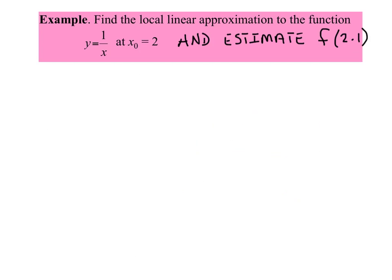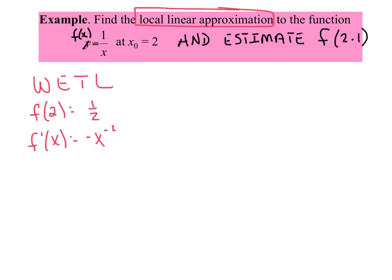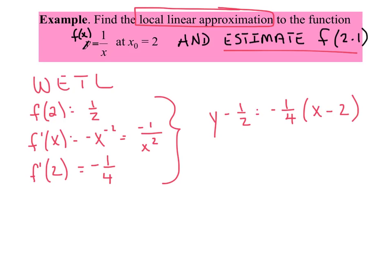Our next example, they want us to find the local linear approximation for the function y equals 1 over x. That y there, you could just pretend that that's an f of x. Don't let that scare you. They want us to do a point of tangency at x equals 2 and then use that tangent line to estimate f of 2.1. So here we go. As soon as they said local linear approximation, I'm thinking write the equation of a tangent line. That's all I'm thinking. So let's see. We know that f of 2 is equal to 1 half. We know that f'(x) is equal to negative x to the negative 2, otherwise negative 1 over x squared. And if I find the slope specifically at 2, I'm going to get negative 1 fourth. Put that all together. We're going to get a tangent line: y minus 1 half equals negative 1 fourth quantity x minus 2.